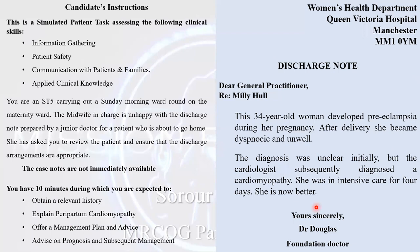The discharge notes written by the junior colleague state: the patient was 34 years old — a risk factor — who developed preeclampsia — another risk factor. After delivery she became unwell and dyspneic. The diagnosis was initially unclear, but the cardiologist diagnosed cardiomyopathy. She was in intensive care for four days and is now ready for discharge. This is a deficient discharge letter, and your agenda is to obtain a relevant history, explain the condition to the patient, and address the points missing from the discharge note.